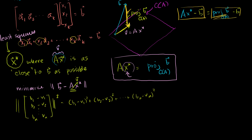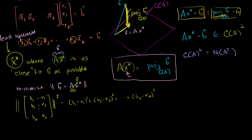So Ax star minus b is a member of the orthogonal complement of my column space. The orthogonal complement is the set of all vectors orthogonal to everything in your column space. This vector, pointing straight down onto my plane, is clearly a member of the orthogonal complement. Now, the orthogonal complement of the column space is equal to the null space of A transpose — the left null space of A.